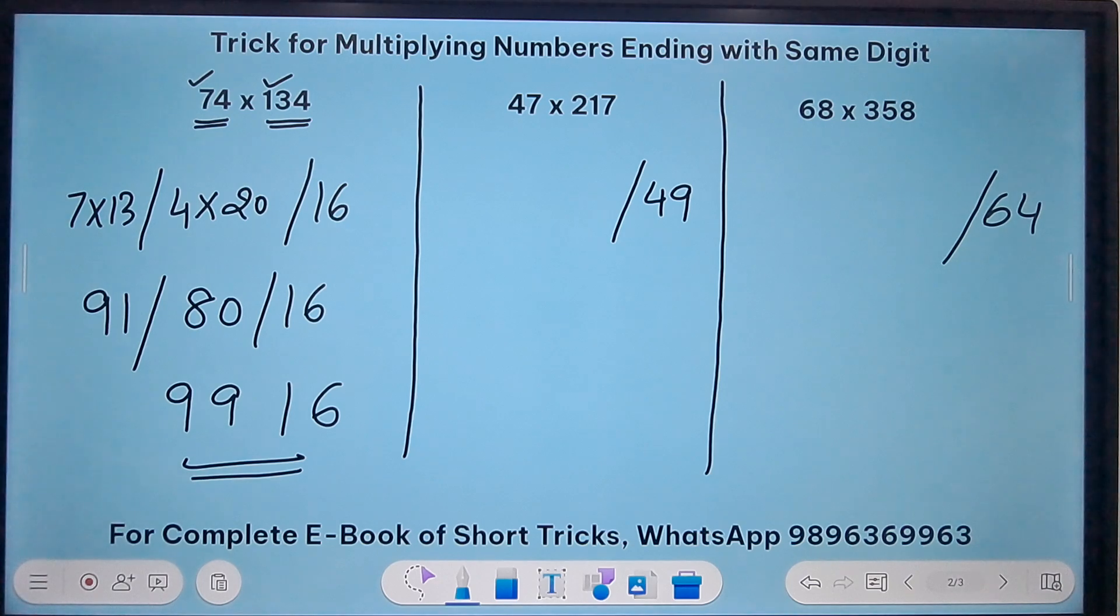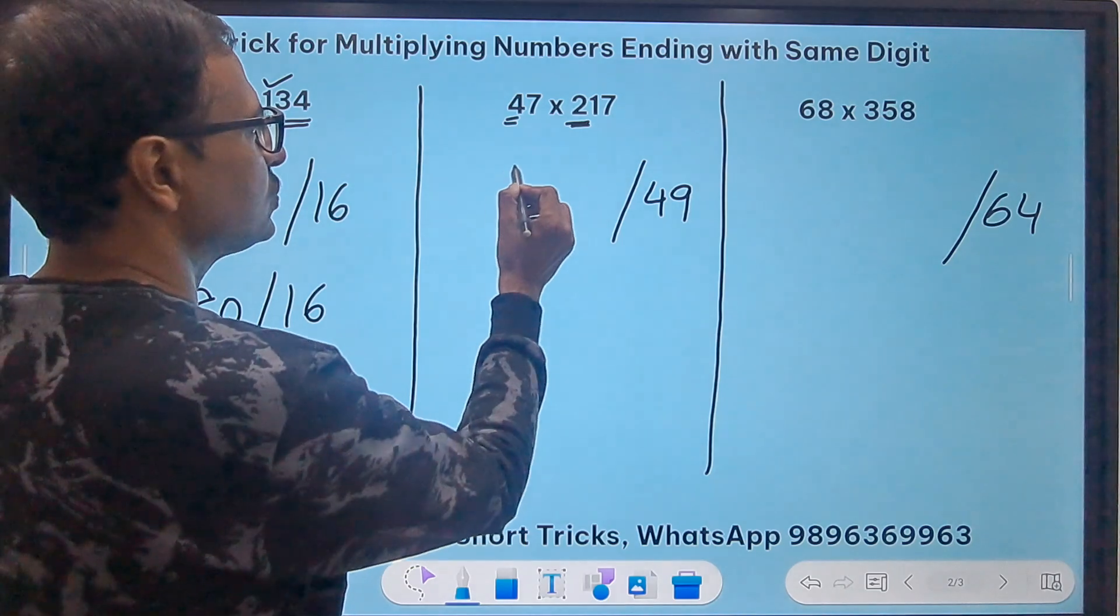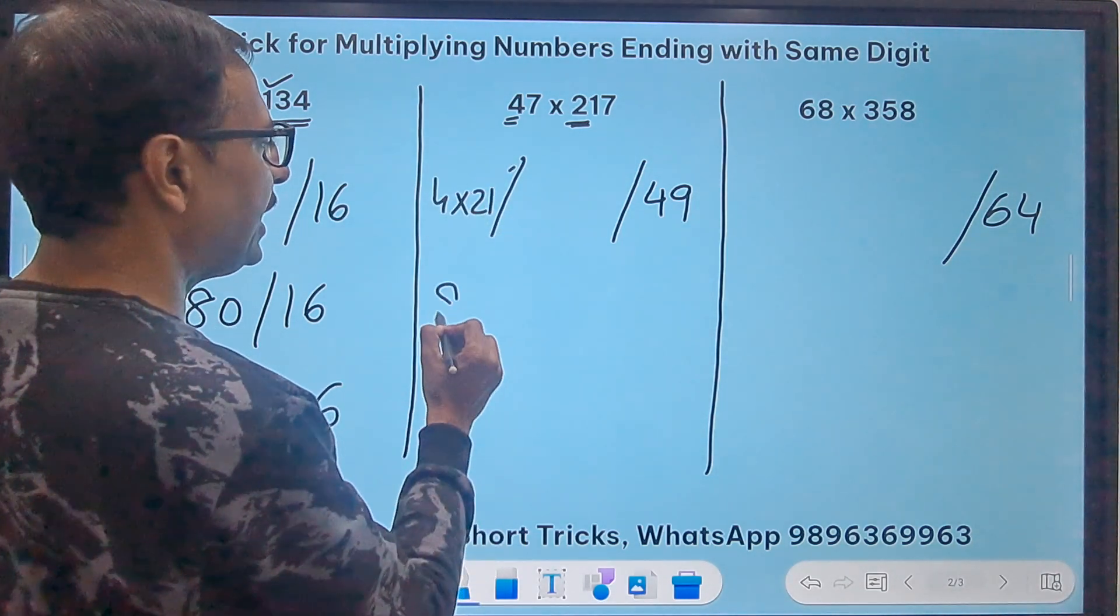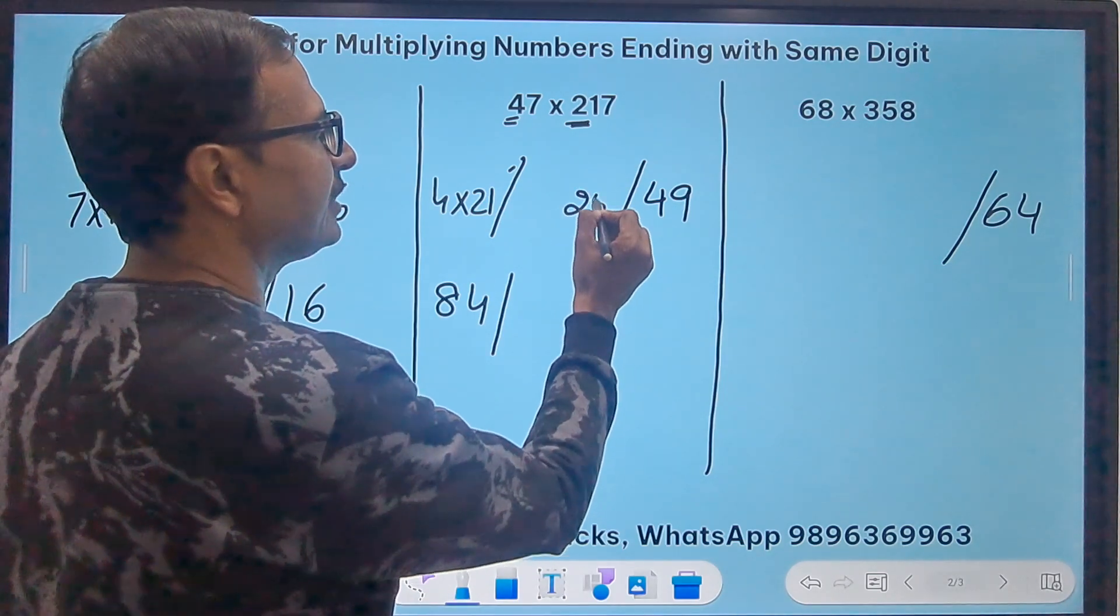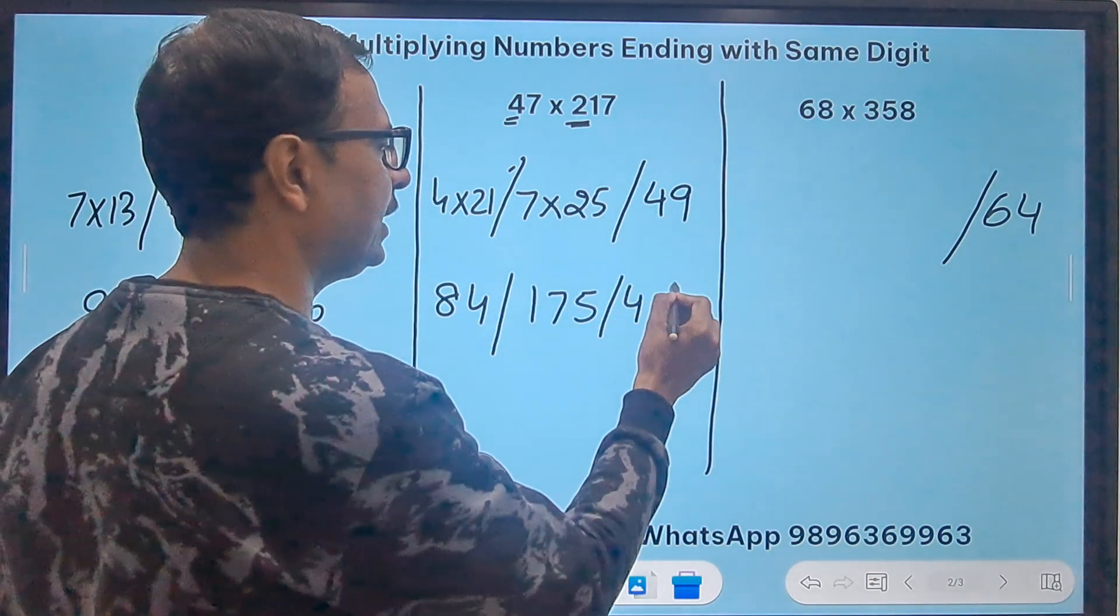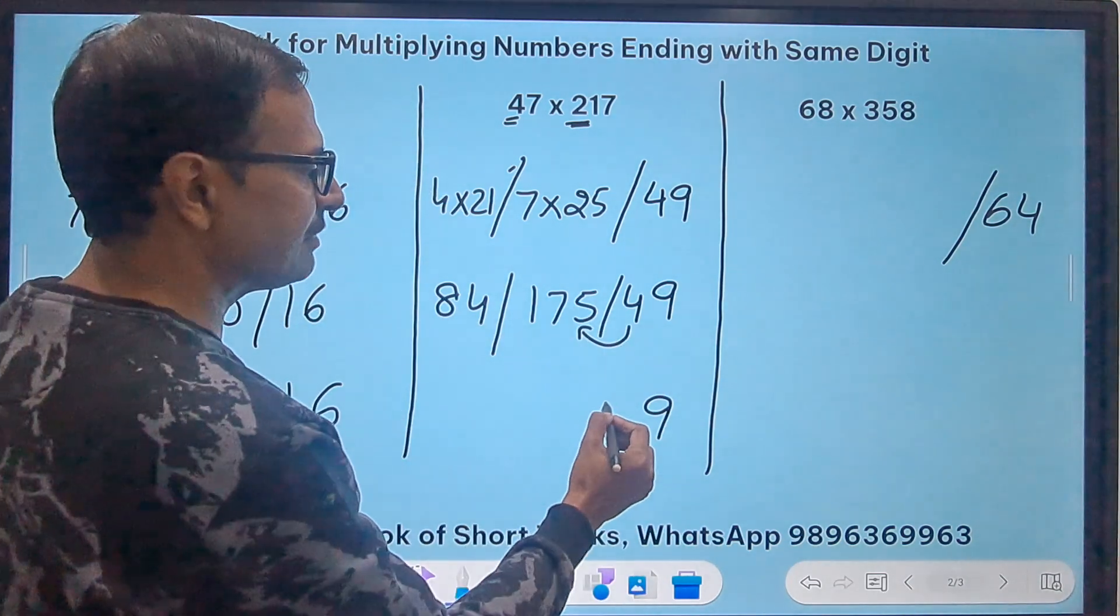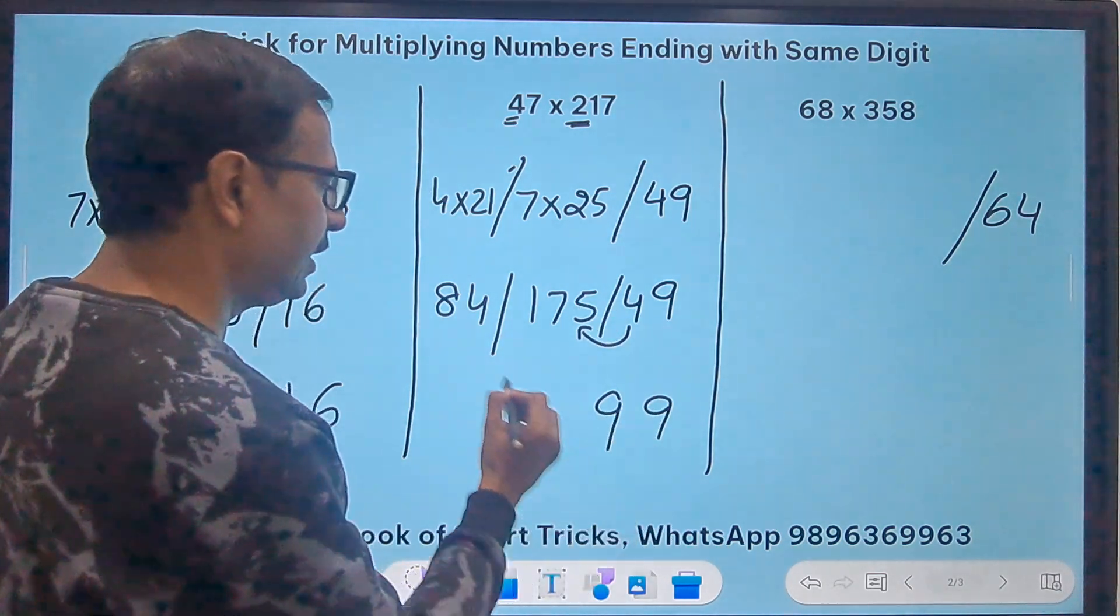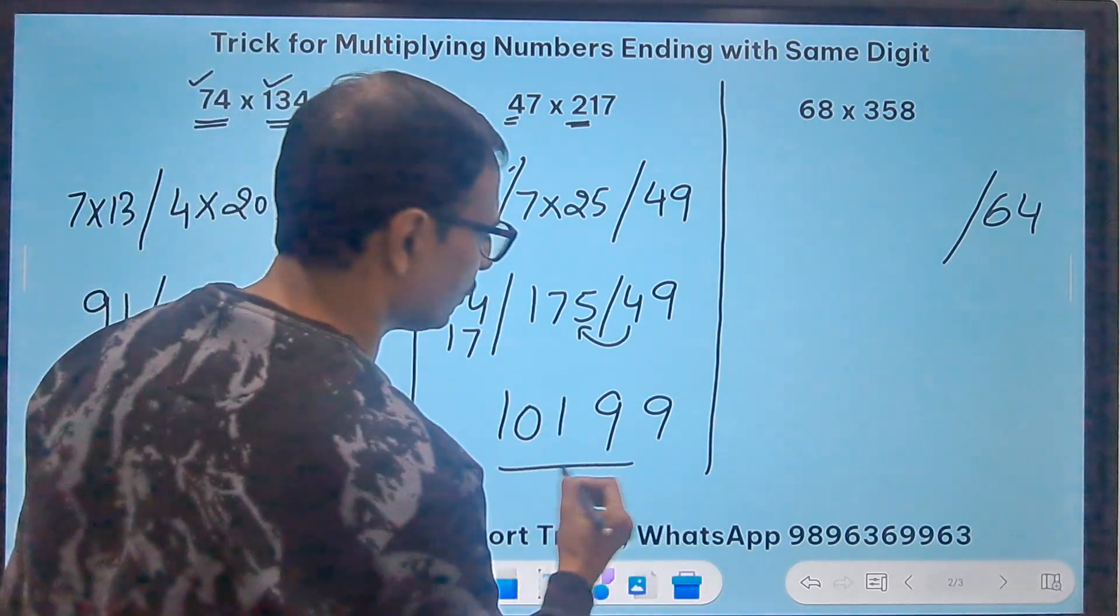Likewise if you see here this is 4 and this is 21 so 4 times 21 comes out to be 84 and 4 plus 21 is 25 times 7 this is 175 and then 49. So 9, 4 added to 175 gives me 179, so 9 and 17 gets added here this gives me 101, so 10199 is the required product.